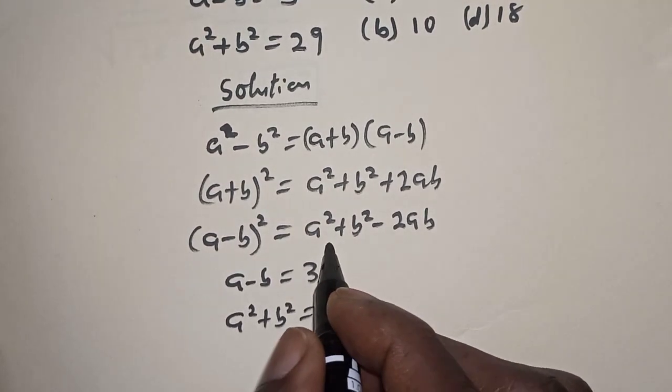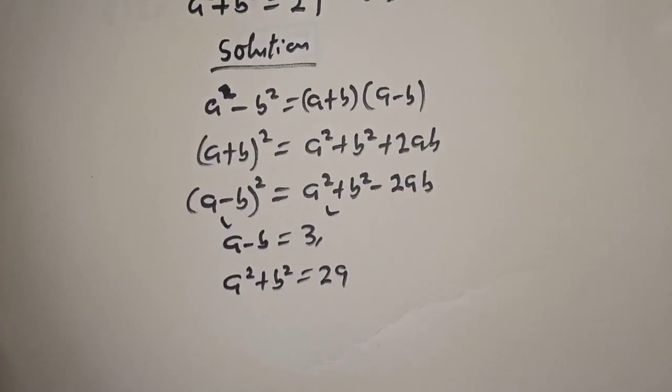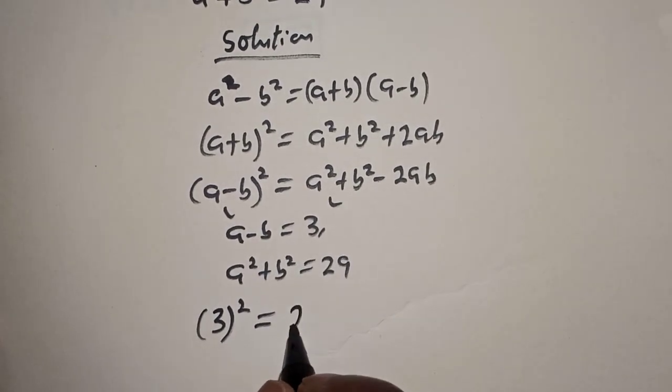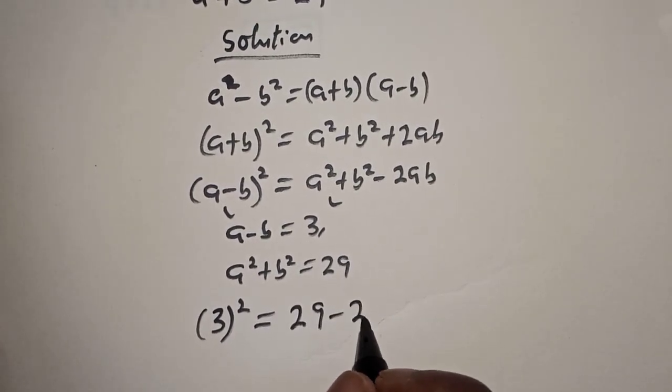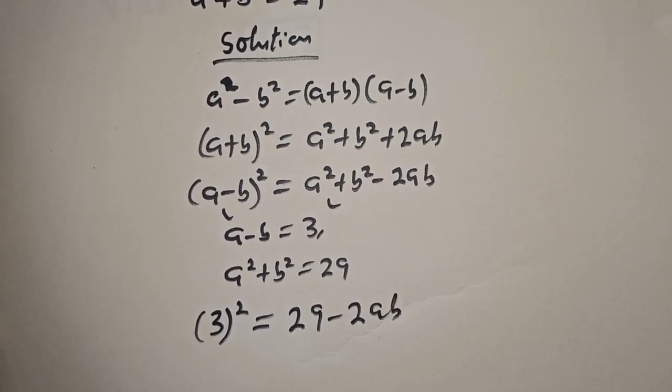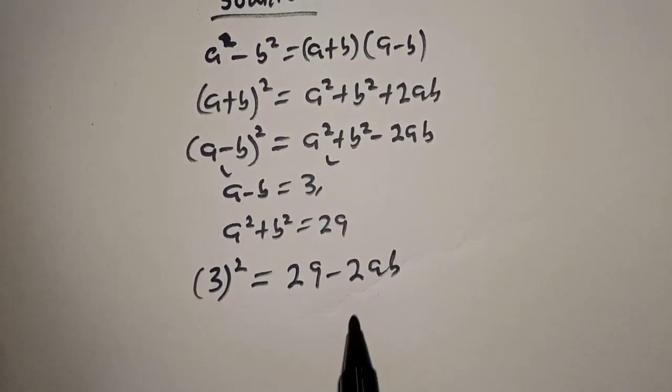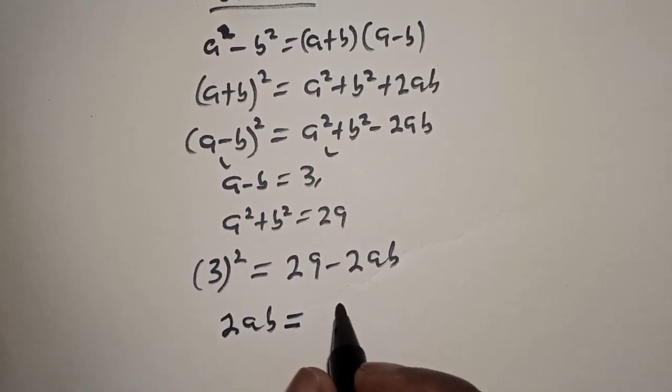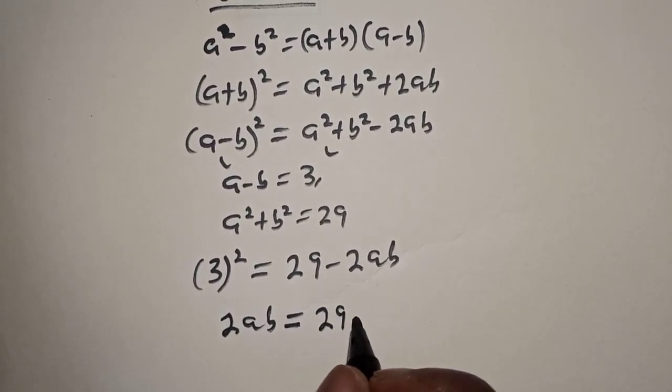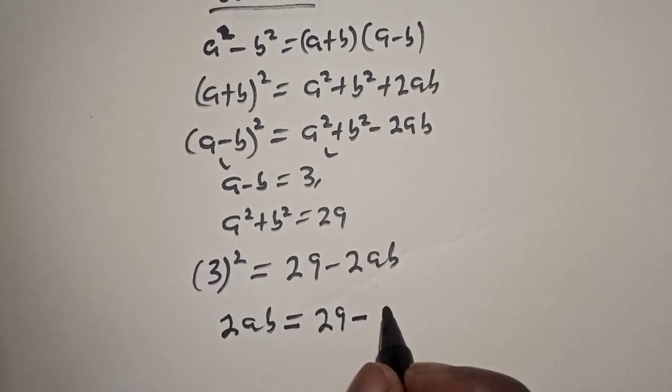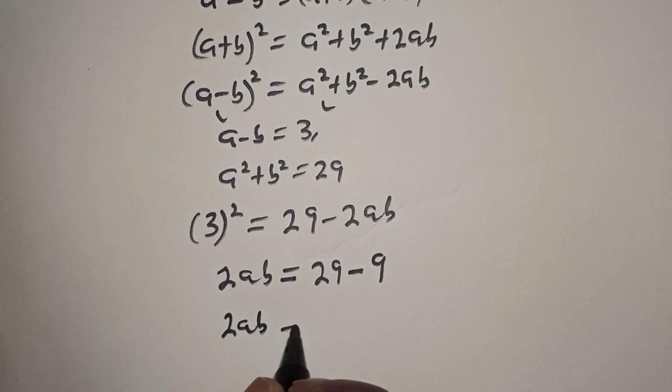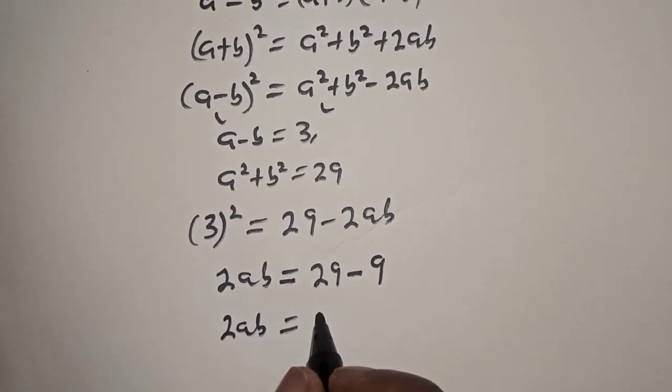Let's substitute for this and this. We have 3 square is equal to 29 minus 2AB. Let's rearrange this. 2AB is equal to 29 minus 3 square is 9. Then 2AB is equal to 29 minus 9. This is 20.